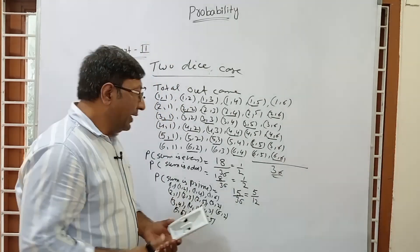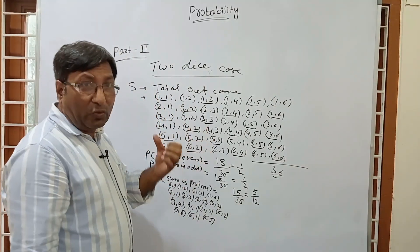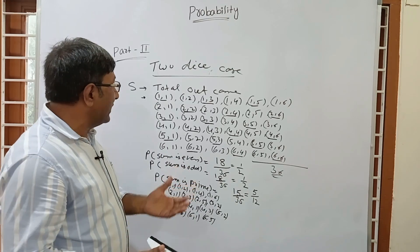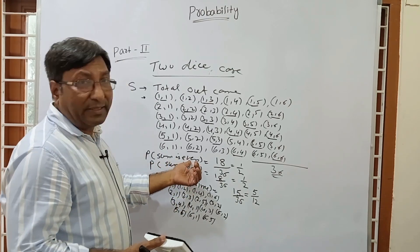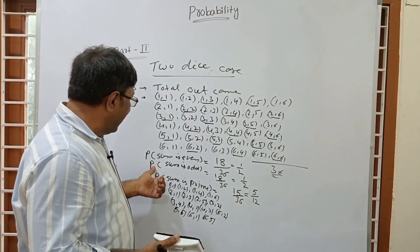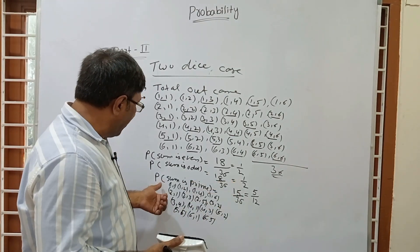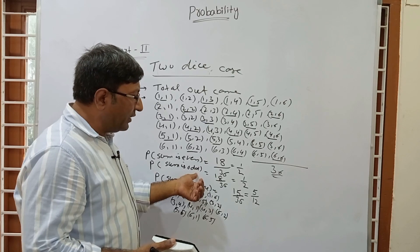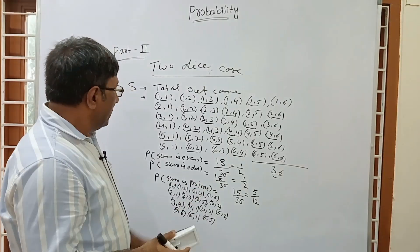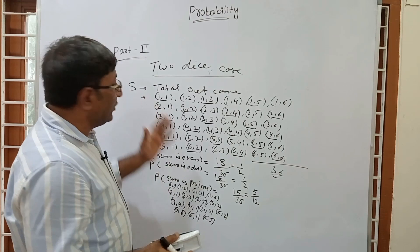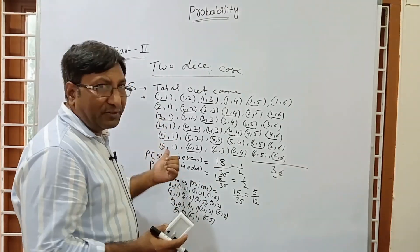So to summarize the 2-dice case: probability of sum even is 1/2, probability of sum odd is 1/2, and probability of sum being prime is 5/12 (that is 15/36). Now we move on to the next topic: cards.